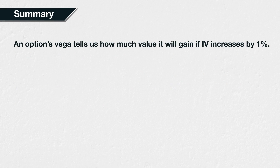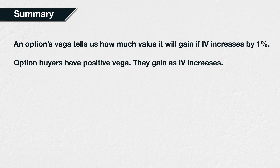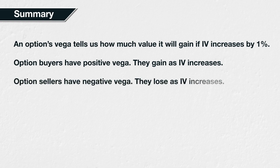In summary, an option's Vega tells you how much the option price will change in dollars if implied volatility increases by 1%, assuming that everything else, like the underlying price and time to expiry, remains the same. Option buyers have positive Vega, meaning they will gain value when implied volatility increases and lose value when implied volatility decreases — they are long volatility. Option sellers have negative Vega, meaning they will lose value when implied volatility increases and gain value when implied volatility decreases — they are short volatility.